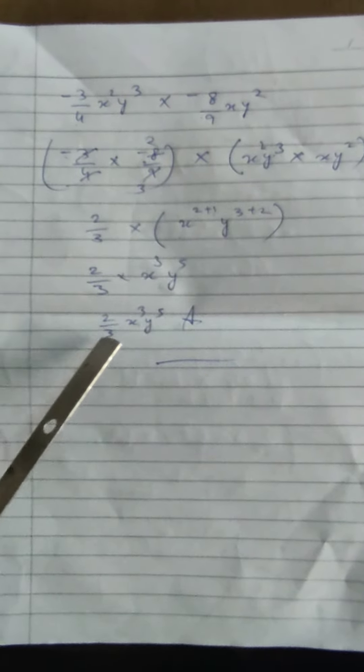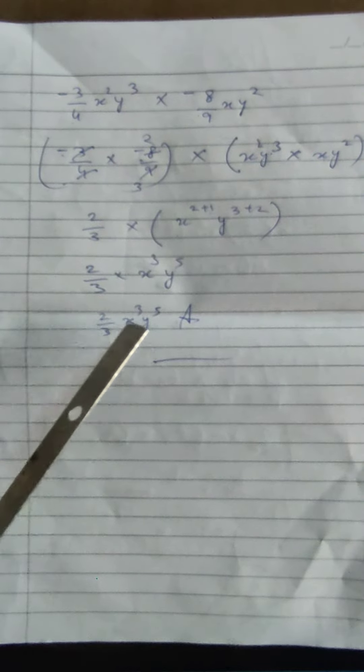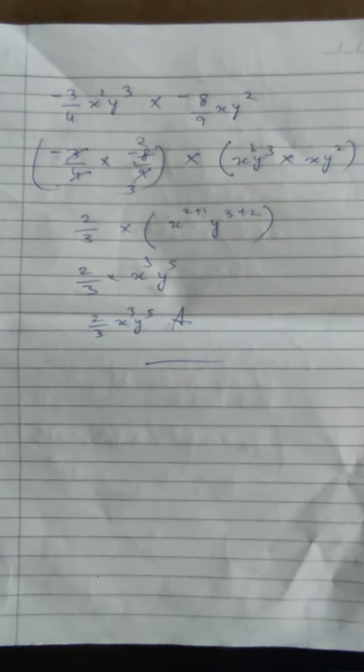So y, y power 3 multiplied by y power 2. When y is multiplied by y, the powers are added, giving us y to the power 5. So the answer will be 2 over 3 x cubed y to the power 5. Yes, ma'am. Thank you.